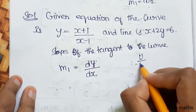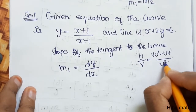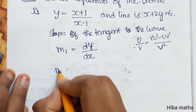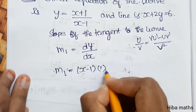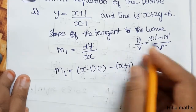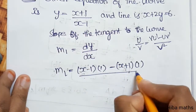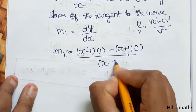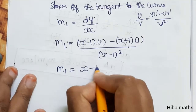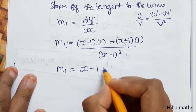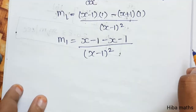Let's use the quotient rule format u by v. The formula is: u/v = (v·u' − u·v') / v². So m1 equals 1 times (x−1) minus (x+1) times 1, all divided by (x−1) squared. So m1 equals x minus 1 minus x minus 1 divided by (x−1) squared, which simplifies to −2/(x−1)².